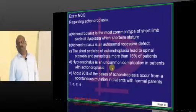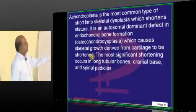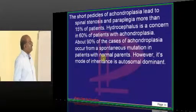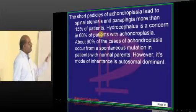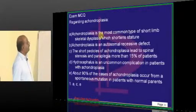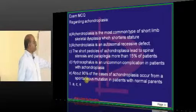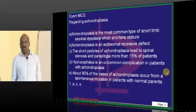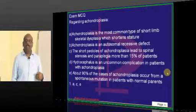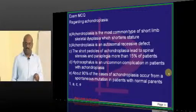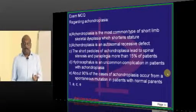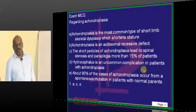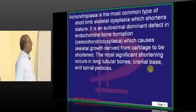Hydrocephalus is not uncommon — it is the main problem in about 60% of patients. About 90% of cases represent a spontaneous mutation in patients with normal parents. Both parents are normal, but the chromosome undergoes a spontaneous mutation. Being a dominant mutation, even one mutation of one chromosome is enough to display the clinical features.